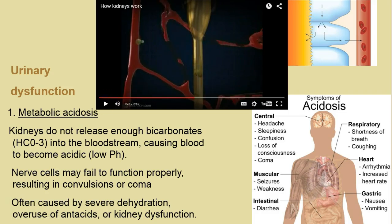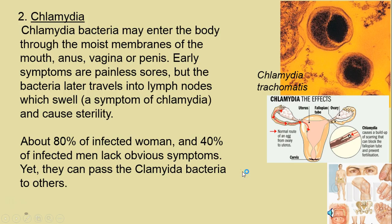Metabolic acidosis — simply put, the kidneys aren't releasing enough bicarbonates. Just like in the mouth, bicarbonates bring the pH close to neutral. Low pH means too acidic; nerves can fail to function. In extreme cases we get convulsions and coma, but there are mild cases too — sometimes just dehydration, people taking too many antacids, or a chronic result of kidney dysfunction.